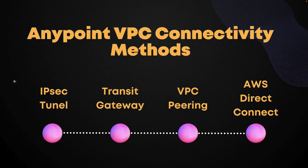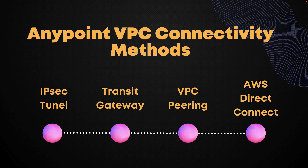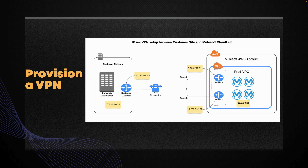Now let us go back and recall that there are multiple connectivity methods to Anypoint VPC. In this video we will be discussing the IPSec Tunnel connectivity method. As a reminder, an IPSec tunnel with network-to-network configuration allows us to connect your on-prem data centers to the Anypoint VPC. An IPSec Tunnel is generally the recommended solution for VPC to on-prem connectivity, providing a secured and safe way to connect and configure routing IPs and your CIDR block to your on-prem data centers.